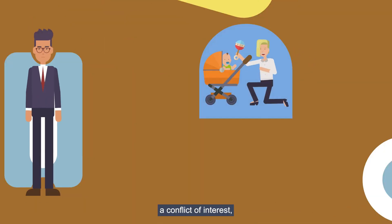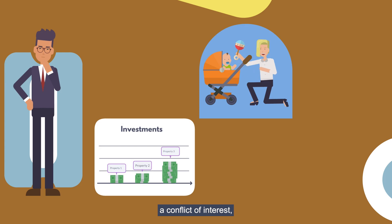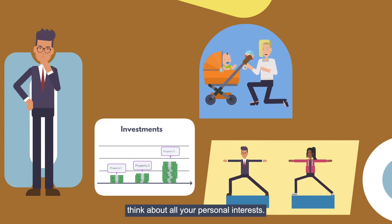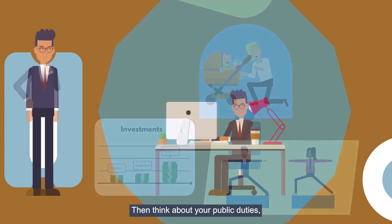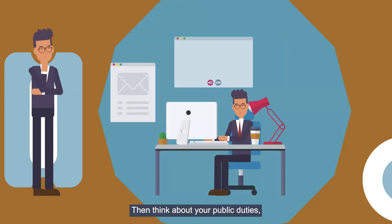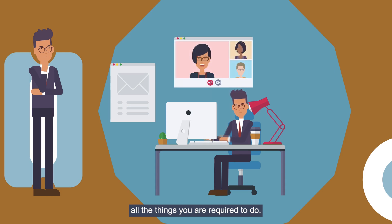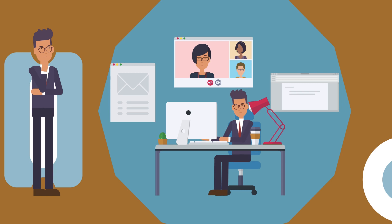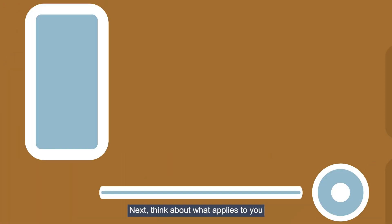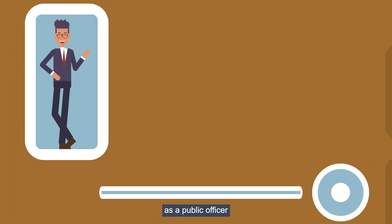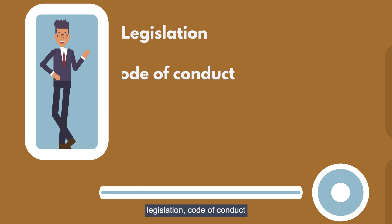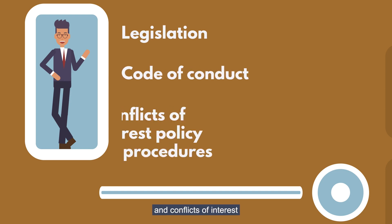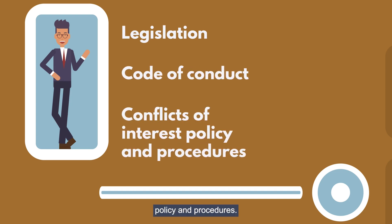To help you identify a conflict of interest, think about all your personal interests. Then, think about your public duties — all the things you are required to do. These may be found in your position description. Next, think about what applies to you as a public officer, like your authority's legislation, code of conduct, and conflicts of interest policy and procedures.